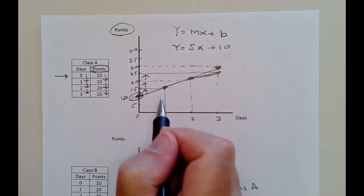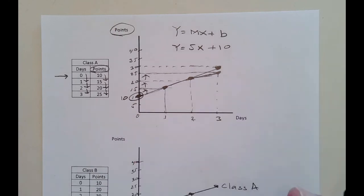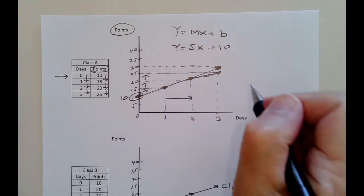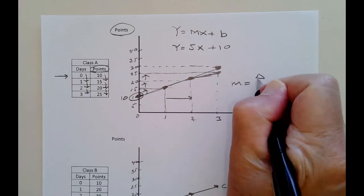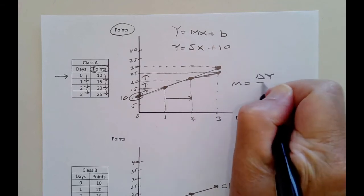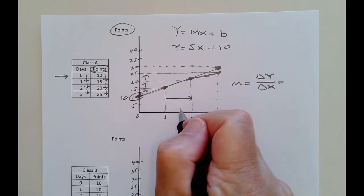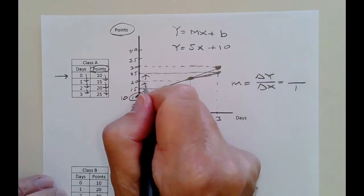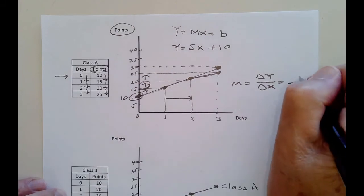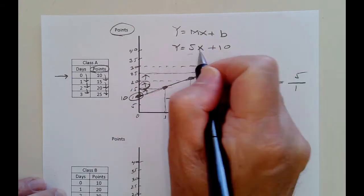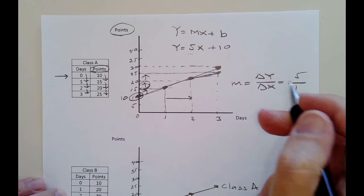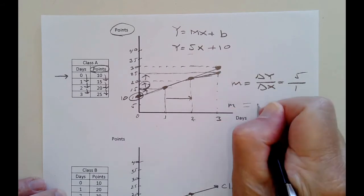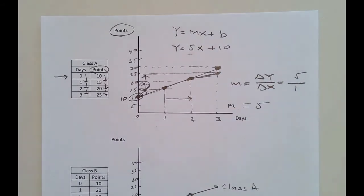Using these two points, we increase the number of days from 1 to 2. The slope is the change in the y variable over the change in the x variable. The x variable went up by one day, and the y variable goes up from 15 to 20 — an increase of 5. So by looking at the graph, we confirm the slope is 5, same as from the table.